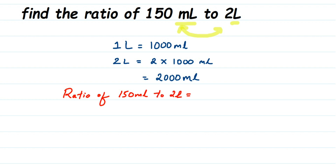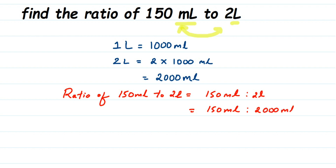Now let's find the ratio. The ratio of 150 milliliters to 2 liters — I'll write 150 milliliters, then the ratio sign, then 2 liters. This is equal to 150 milliliters is to 2000 milliliters, since we converted 2 liters to 2000 milliliters.